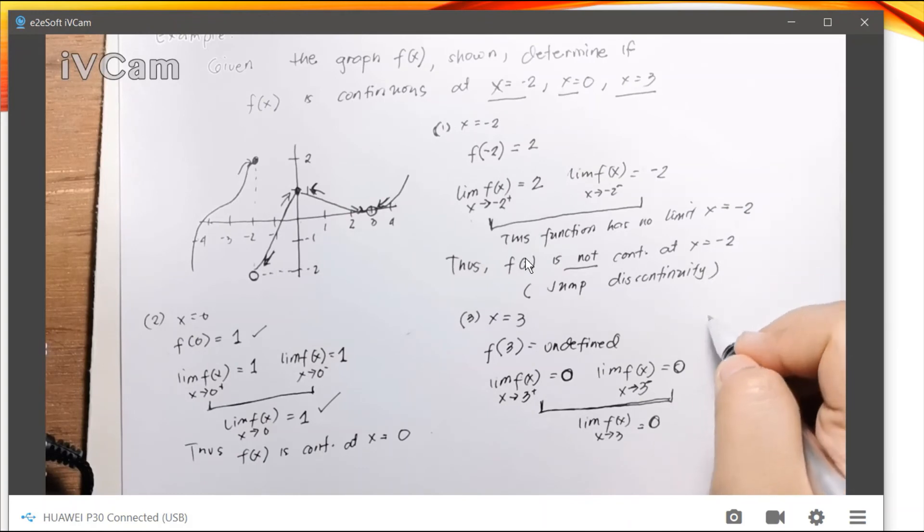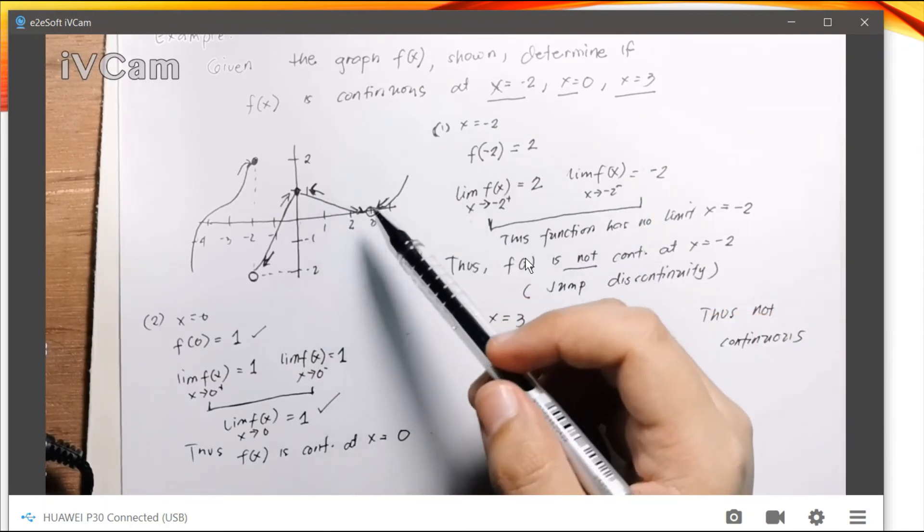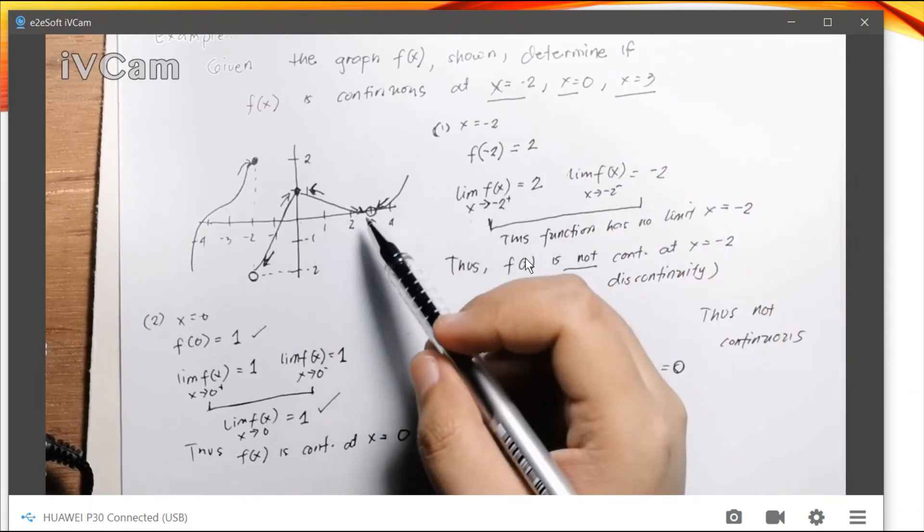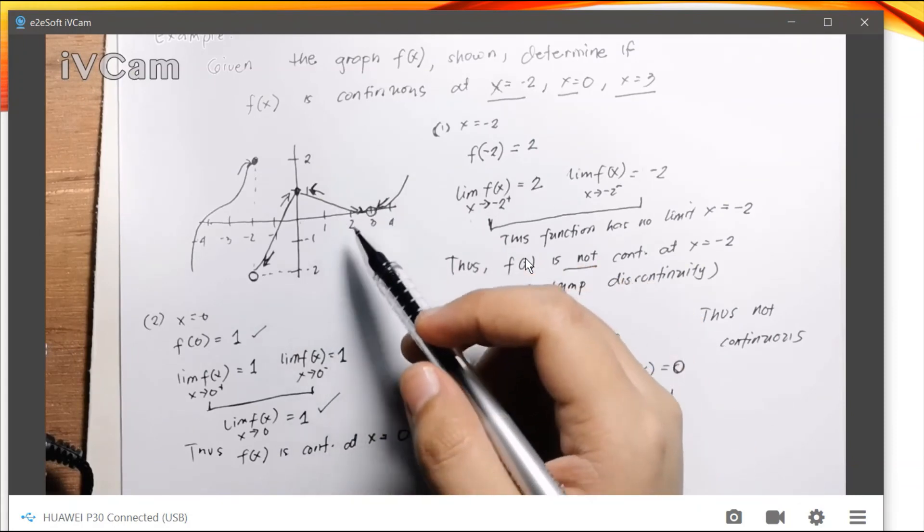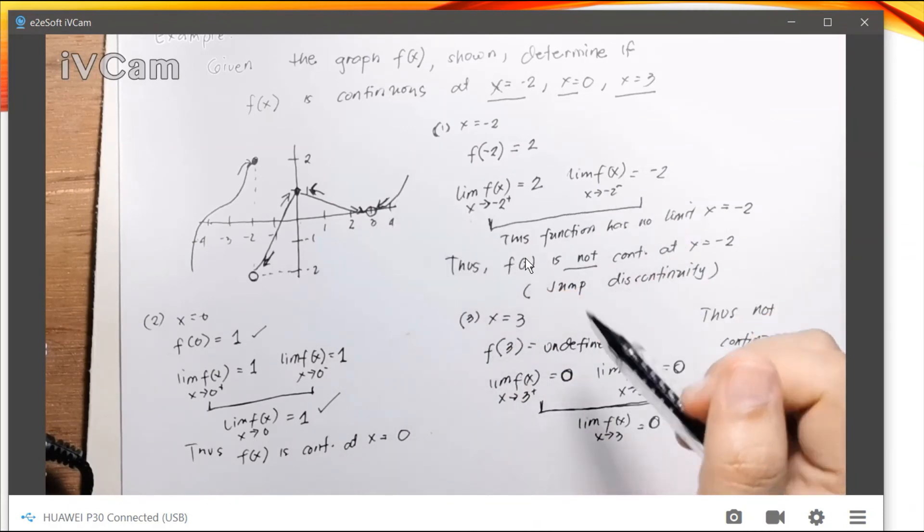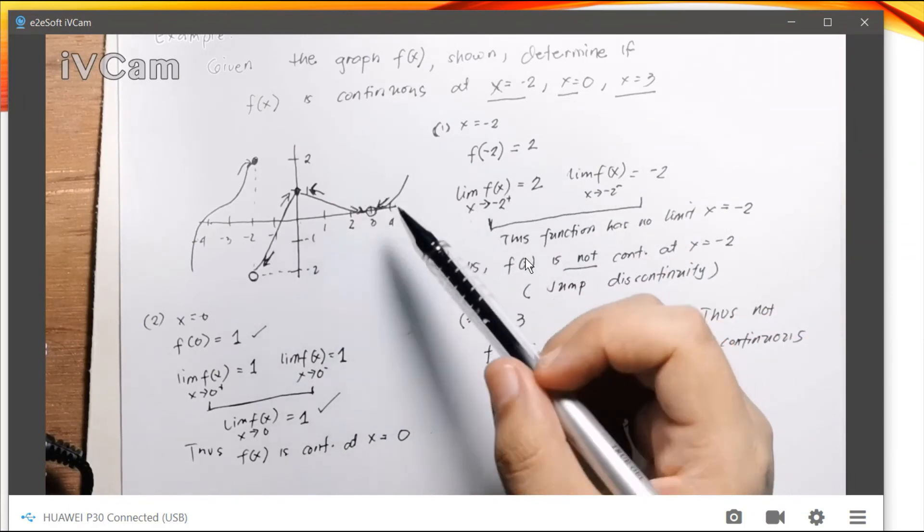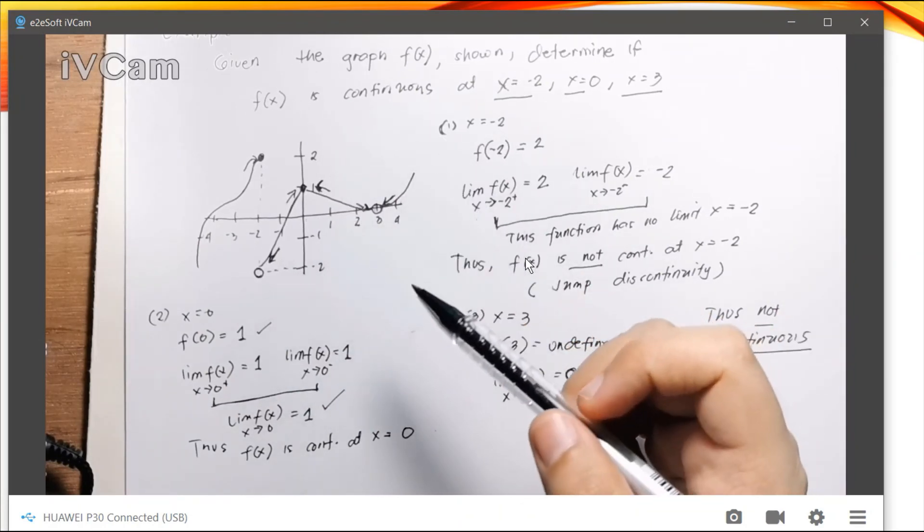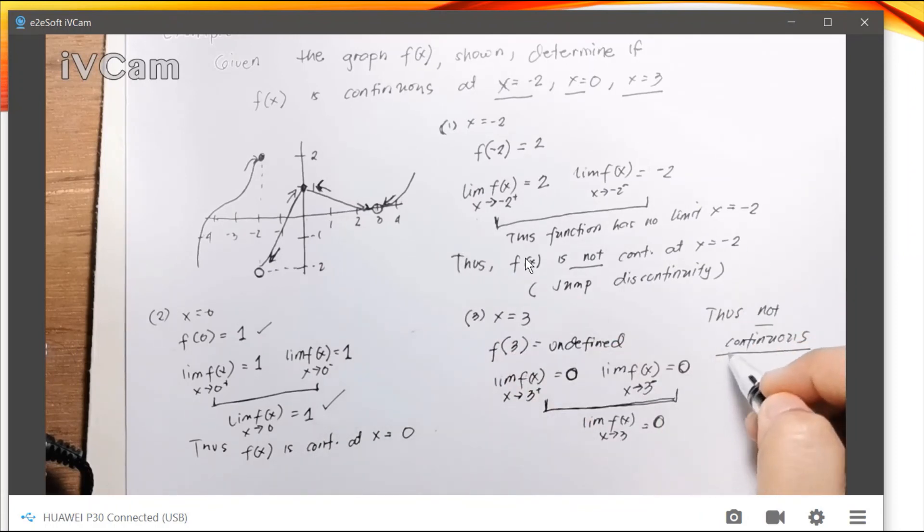So in other words, we can assume this as not continuous, which is why there's a hole in the graph or an undefined value. So if continuous at a function at a point, there should be a value, and at the same time, there should be a limit at that value at that x. Since there is a limit but there's no value at that point, this is not continuous. So this kind of discontinuity is called the removable discontinuity.